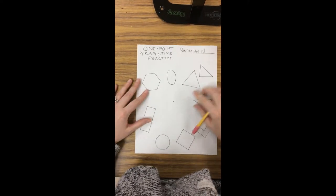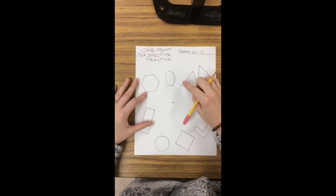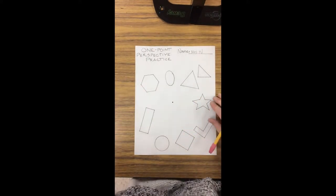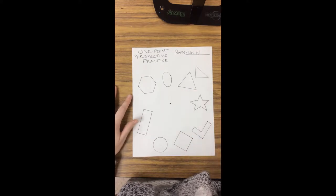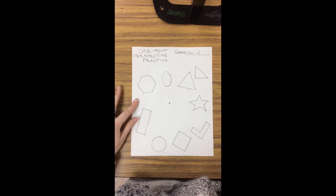And this dot in the center is called the vanishing point. All of our lines that we draw from the corners of each shape are going to go straight to the vanishing point, which is what makes things look 3D.